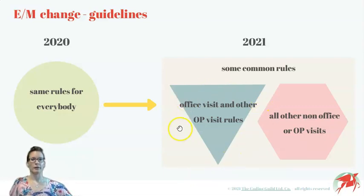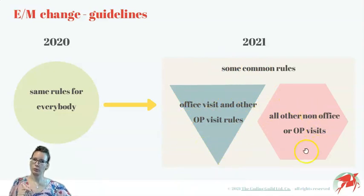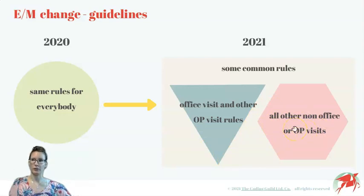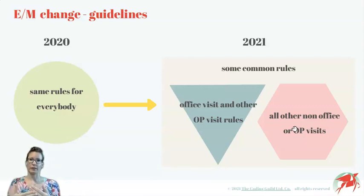We have a separate set of rules only for office visit and other outpatient services. And then we have a third group of rules for all other non-office or other outpatient services, such as emergency visits, inpatient visits, skilled nursing facility visits, etc. Going forward it is very important to understand this difference, because we have to recognize when we need one set of guidelines over the other.